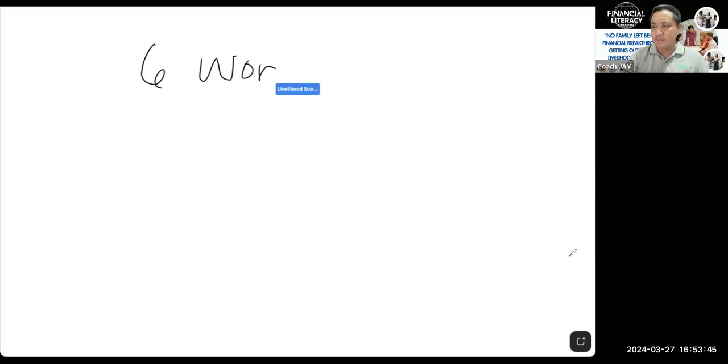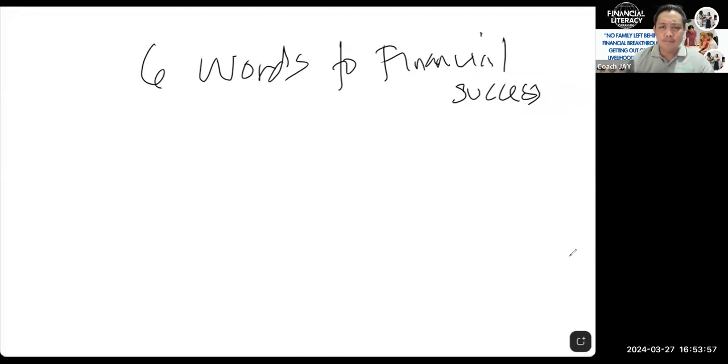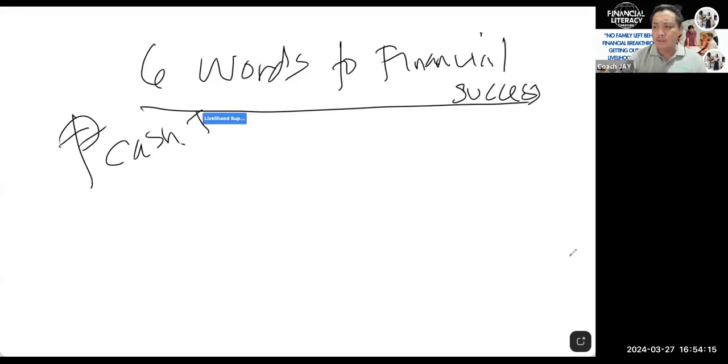I call this topic Six Words to Financial Success. How many of you want to become financially successful? It's not really how much money you make, it's how much money you keep and how much discipline you put to your money. It's all about how cash flows. Money without financial intelligence is money soon gone, but financial intelligence is your ability to control cash flow.